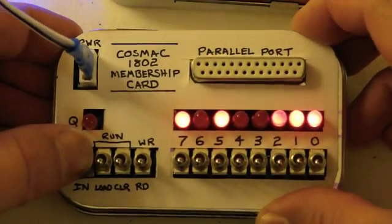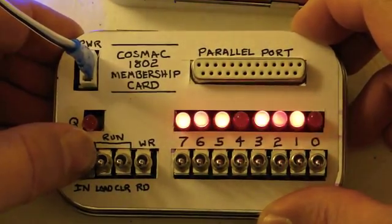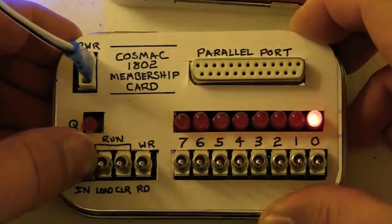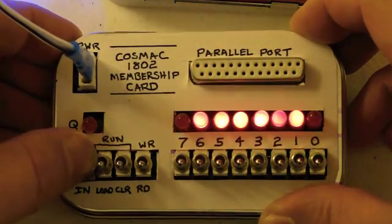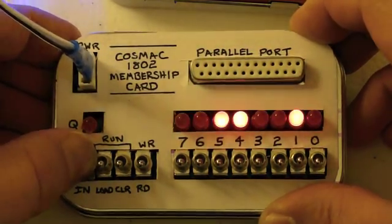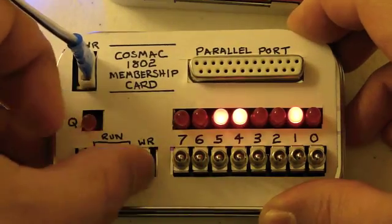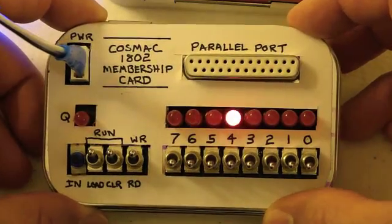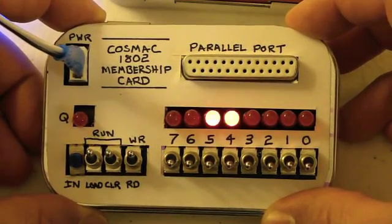The 1802 is a retro microprocessor made about 30 years ago, and Lee Hart has created a nice kit that puts the whole thing into an Altoid can with front panel switches and lights just like the old original microcomputers had.